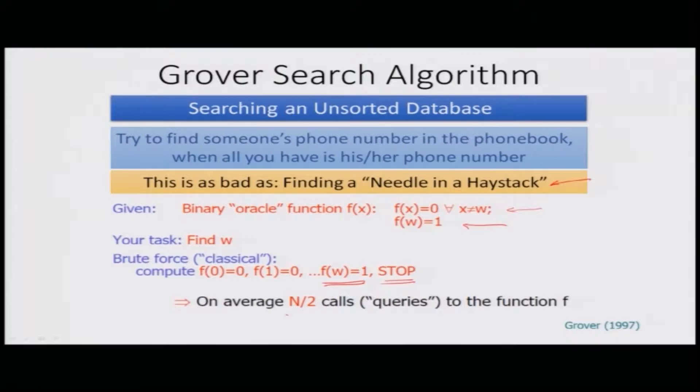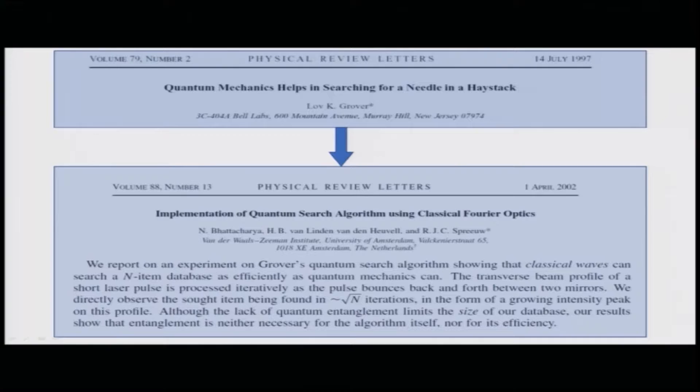On average, n/2 calls or queries are required to the function to find the value of w. That is the classical approach. What Grover was able to show was that if the quantum oracle is used, then it can be done in √n approaches, which is something we have discussed earlier in terms of plain Grover's algorithm.